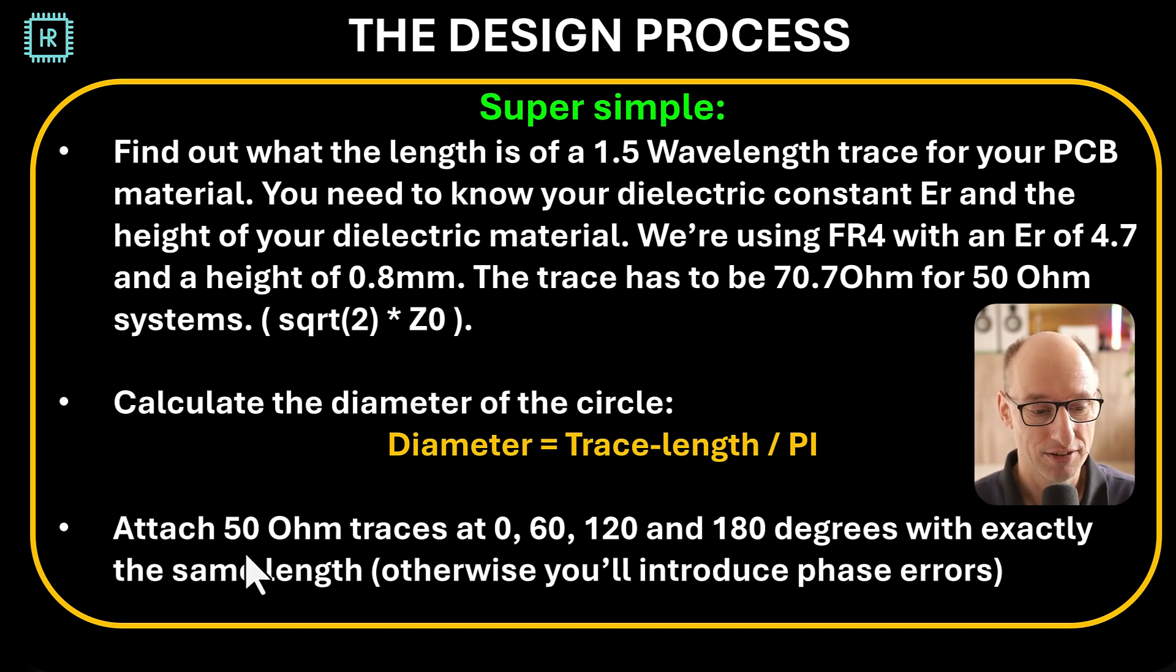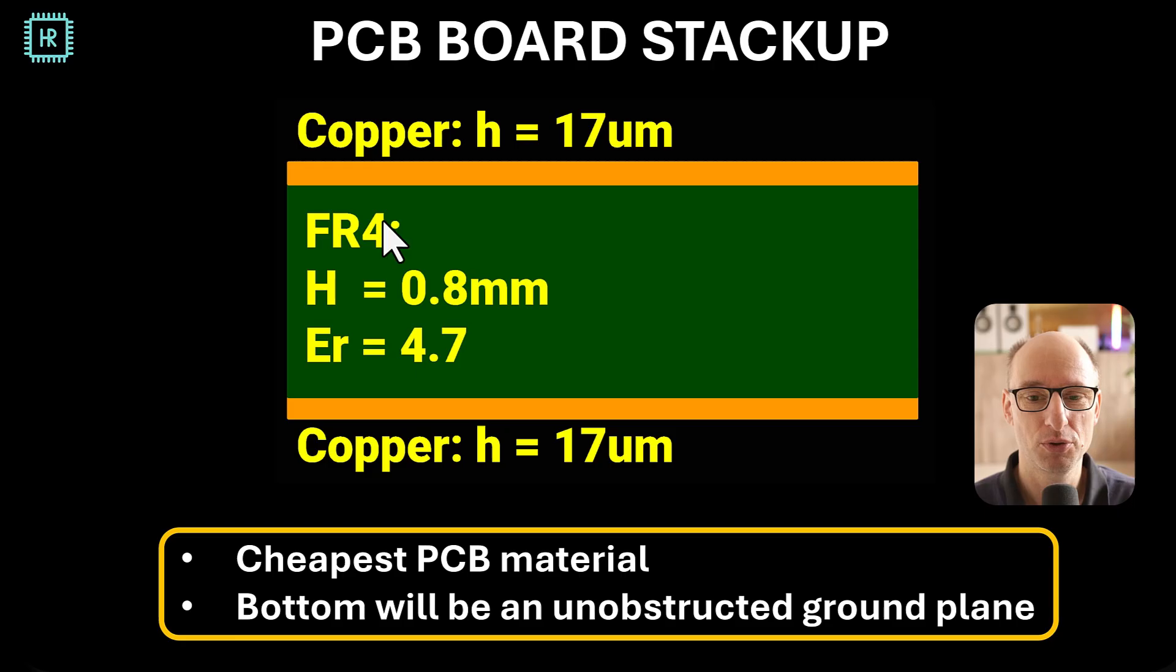Luckily for the demonstration, it's not a difference. And the last step is you just attach 50 ohm traces at 0, 60, 120, and 180 degrees with exactly the same length—otherwise you'll get phase errors. Now another thing you need to figure out is the impedance for the quarter wave transformer, and that's 70.7 ohms. And again, you can look at the Wilkinson combiner video to find out how you get to that number.